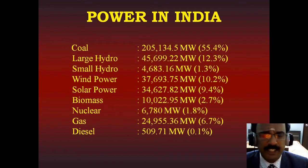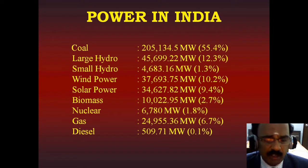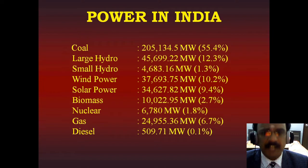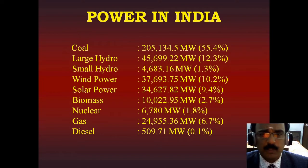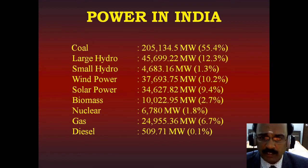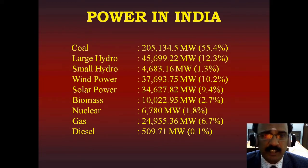Biomass sources include wood, bagasse, rice husk and other agricultural residues, used to generate heat and electricity for agricultural and industrial energy. Coming to power in India: coal provides nearly 200,000 megawatts, which is 55.4 percent of total power.